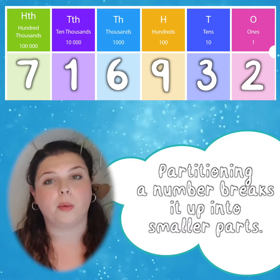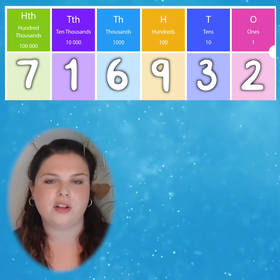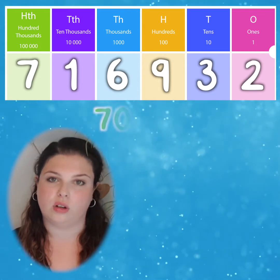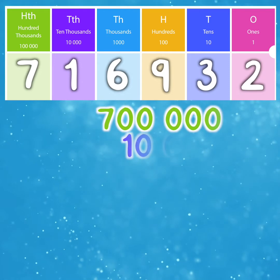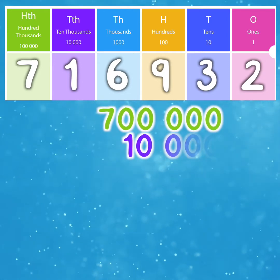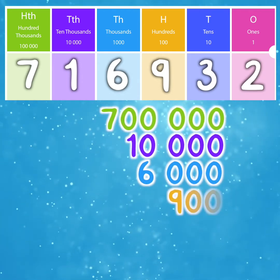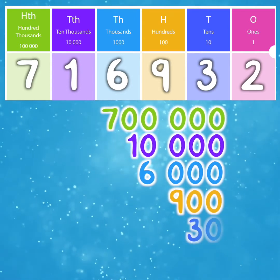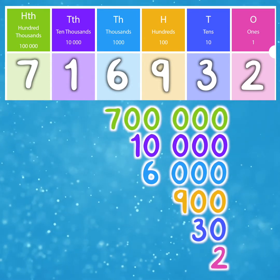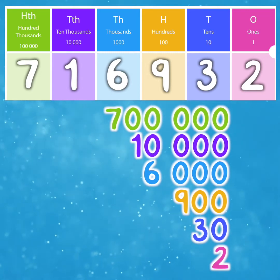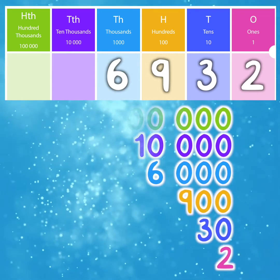When we partition a number, we break it up into smaller parts. For example, in our number we have a 7 in the 100 thousands column, so we have 700,000. We have a 1 in the 10 thousands column, which is the same as 10,000, and so on. So our number, 716,932, can be broken up or partitioned into these smaller parts: 700,000, 10,000, 6,000, 930, and 2.